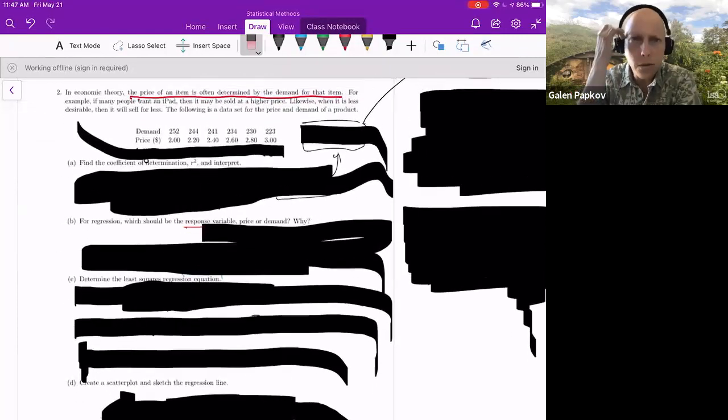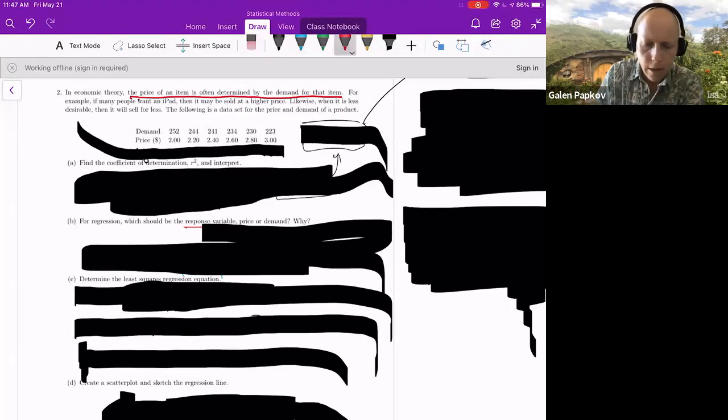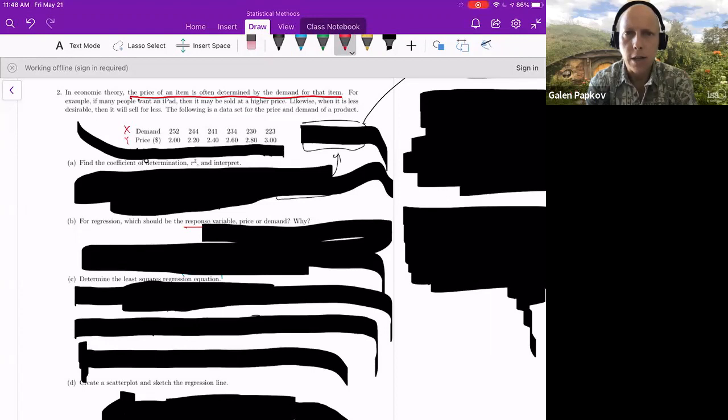Take a look at number two, we're going to skip part C, because that corresponds to the regression that's going to be in the next video. And so number two says, in economic theory, the price of an item is often determined by the demand for that item. I underline that because that is giving you the idea of which should be X and which should be Y. Price is determined by demand. And so because of that, I would say that price is Y and demand is X.